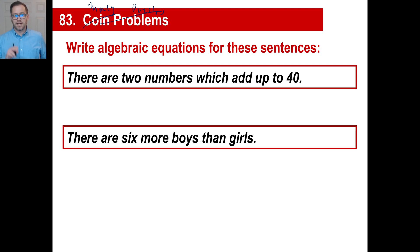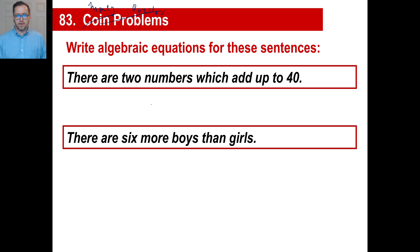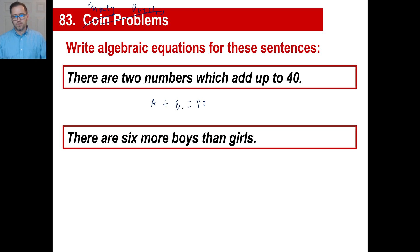Let's slide into this easily. Write algebraic equations for these sentences. There are two numbers which add up to 40 — how would you write that as an equation? You'd just go A plus B equals 40. That doesn't mean they're both 20; one could be 39 and one could be 1. We need another equation.